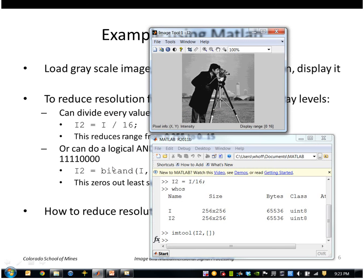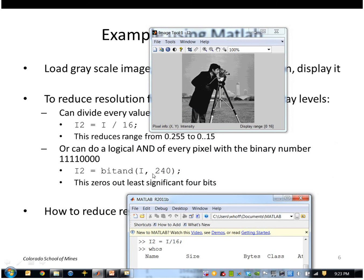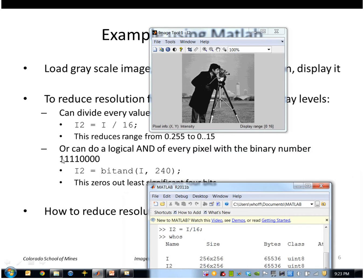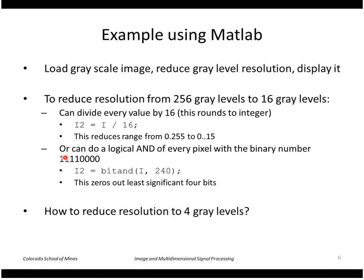Another way to do this is by ANDing the values with a binary number — in this case 111000, which is the decimal number 240. That zeros out the lower 4 bits of each pixel value, meaning we would only have values occupying 16 possible levels.